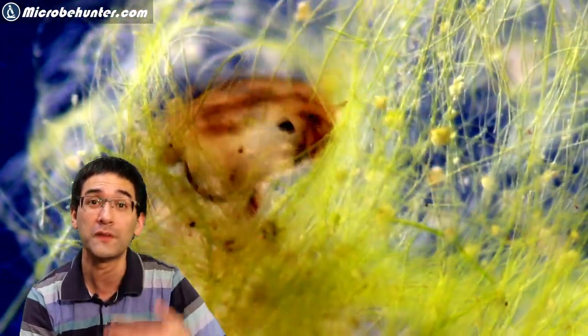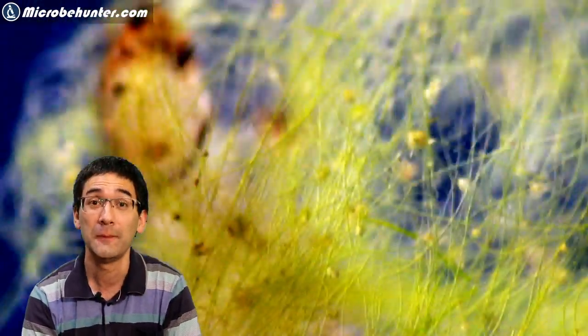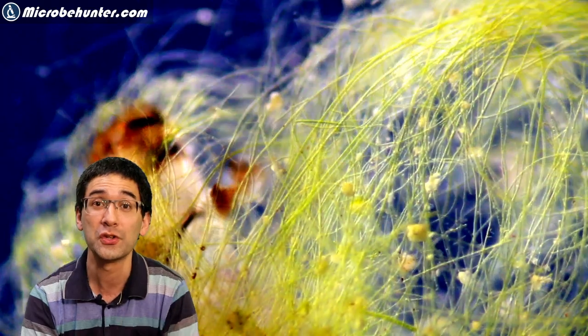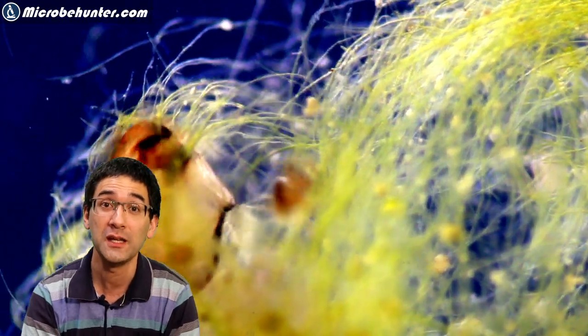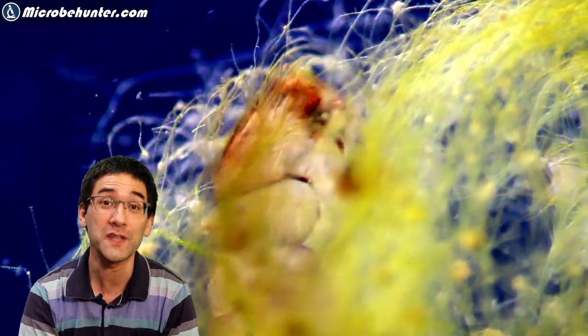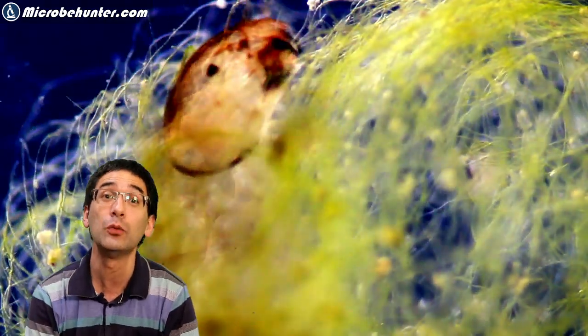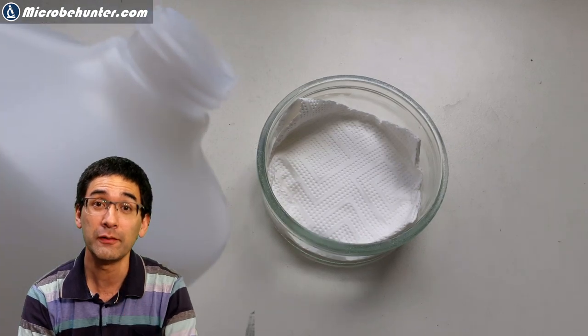One way of breaking this reproductive cycle is to make sure there is no standing water around. You have to dry up all of those ponds. Now let's have a look at an adult mosquito.